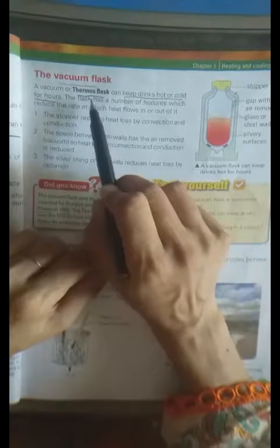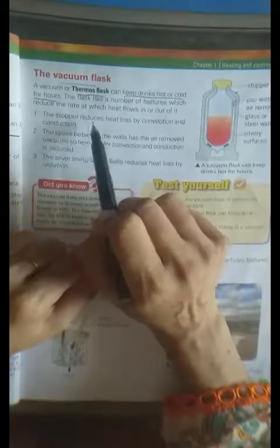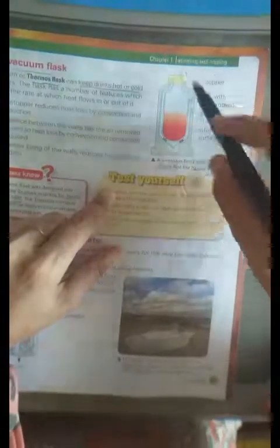And it has so many features through which heat flows in or out of it. For example, this is a thermos flask. Which are the features through which it keeps flows heat in or out? So, these features are number 1 stopper, number 2 space or gap, and number 3 the silvery lining or silvery surfaces.